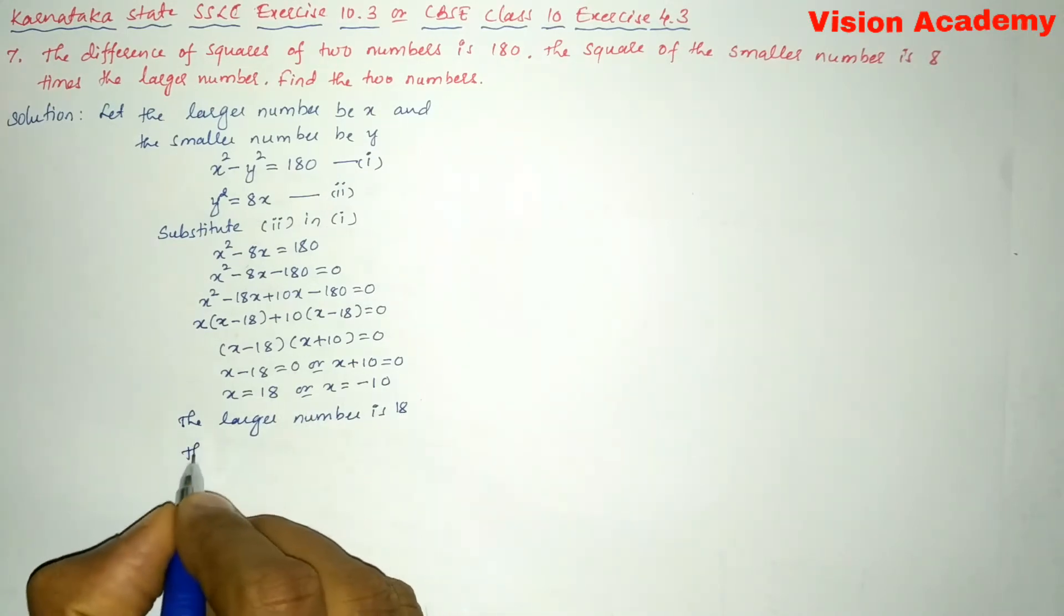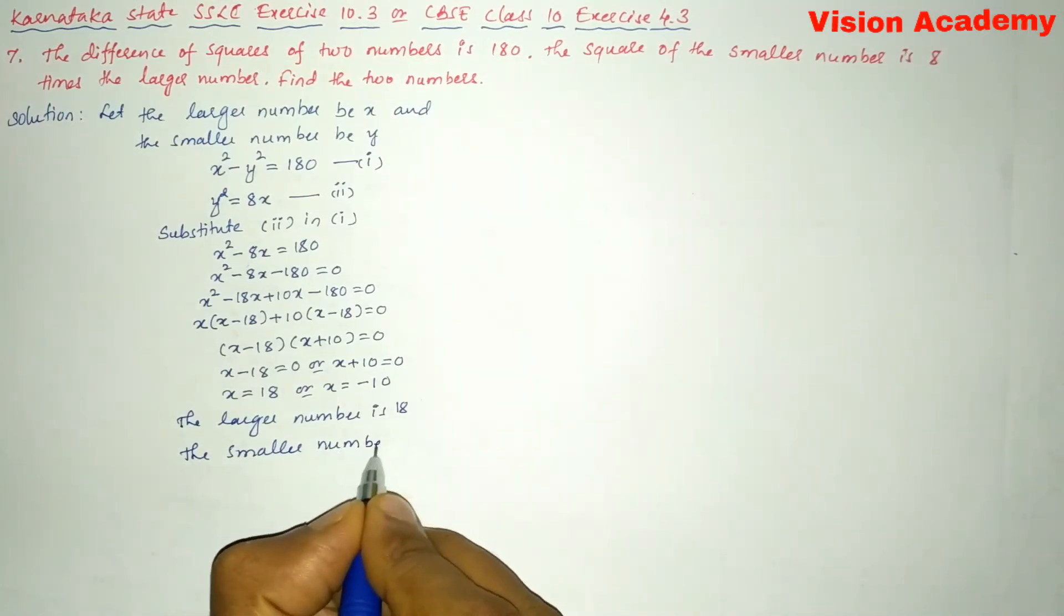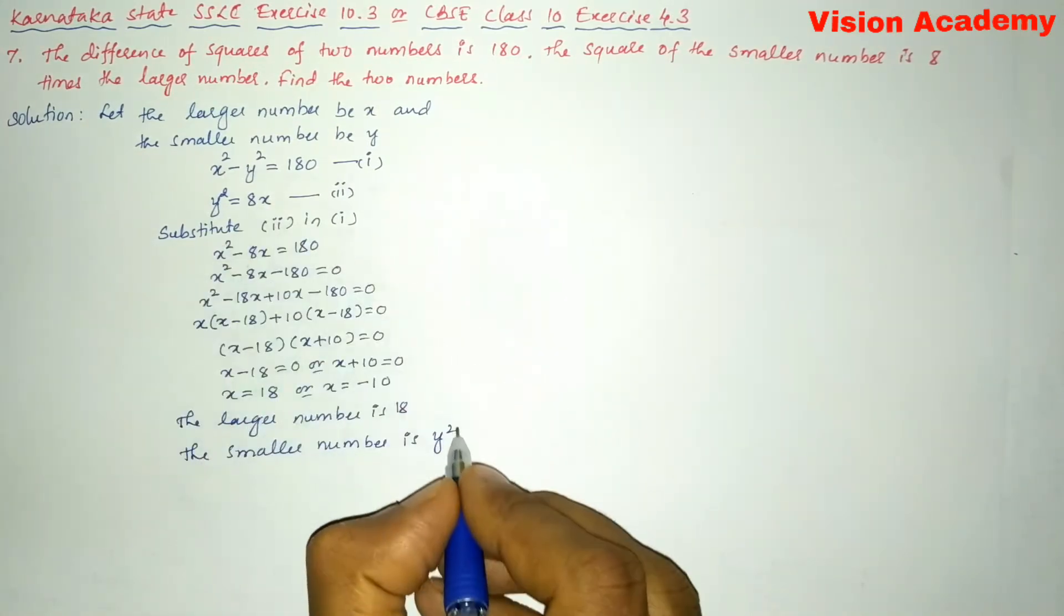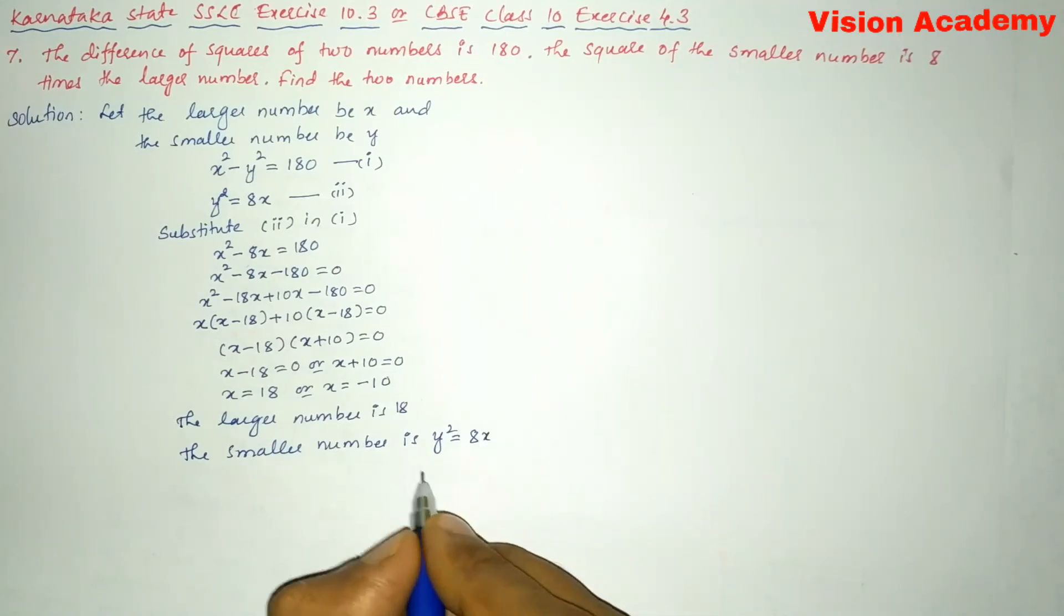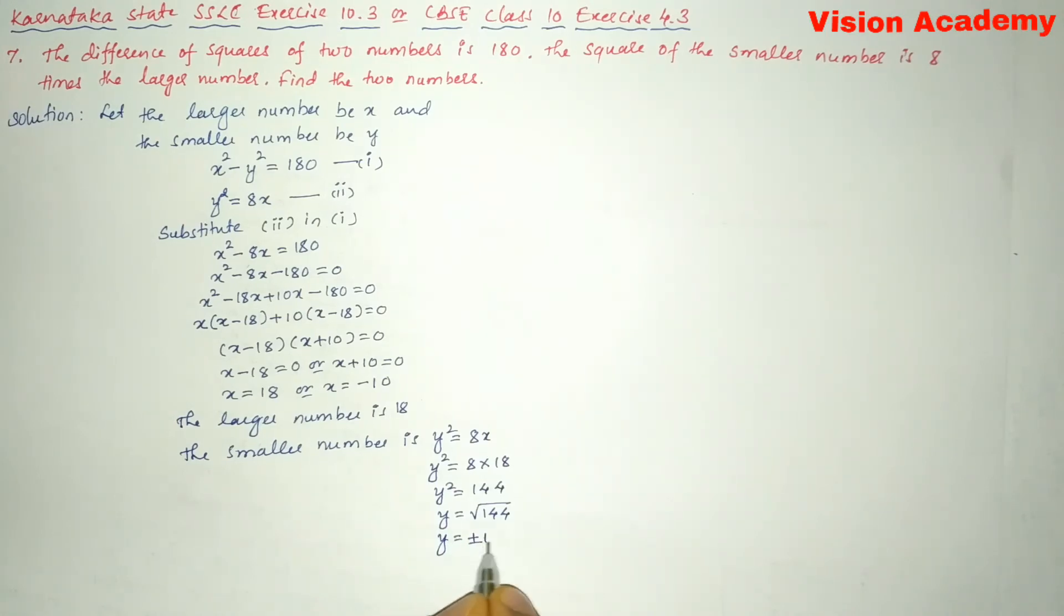Next, the smaller number. y² = 8x. Here we can write y² = 8 × 18 = 144. Let us transform this square from LHS to RHS. It will become square root. So y = √144. 144 is a perfect square of 12. So y = ±12.